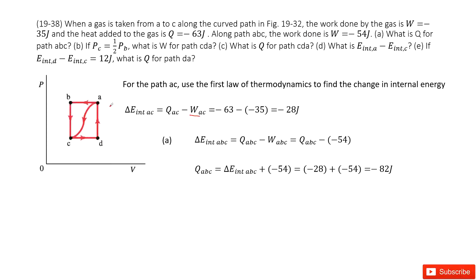Now it asks us to find Q for A-B-C. How can we solve it? For A-B-C, we consider the relationship between Q and W. We always come up with the equation for the change of internal energy. So the change of internal energy for A-B-C equals Q_ABC minus W_ABC.